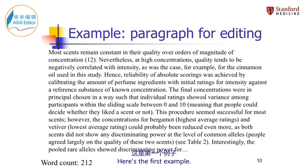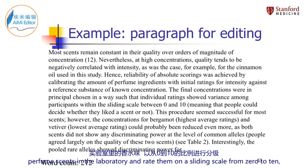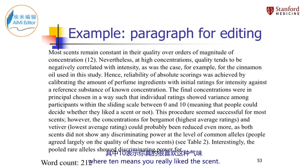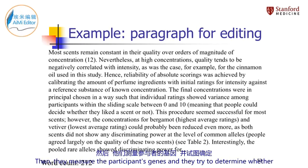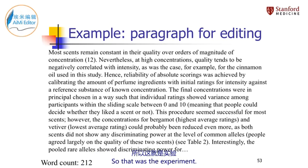Here's the first example. This is from a published scientific paper. In the paper, scientists had participants smell a bunch of different perfume scents in the laboratory and rate them on a sliding scale from 0 to 10, where 10 means you really liked the scent. Then they measured the participants' genes, and they tried to determine whether a person's preference for various scents correlates with their genetics. So that was the experiment.